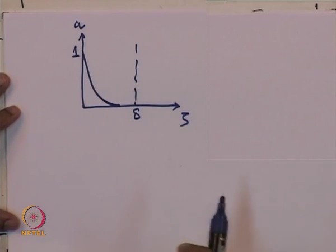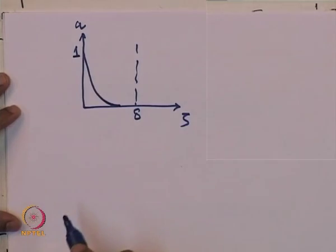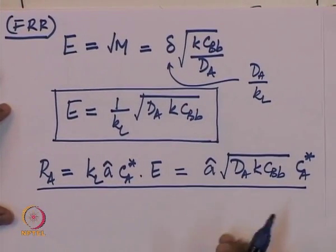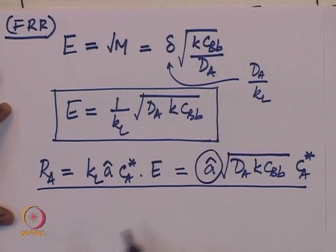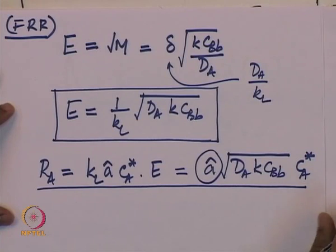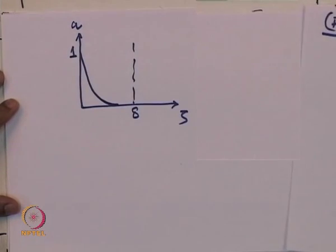This interesting situation arises when the reaction is completed well within the film. The implication is that there is an opportunity to calculate the interfacial area per unit volume of liquid from experimental measurements of rate, knowing the rate constant, diffusivity, and the solubility of the gas. This is one of the uses to which the fast reaction regime is often put in the characterization of mass transfer equipment.